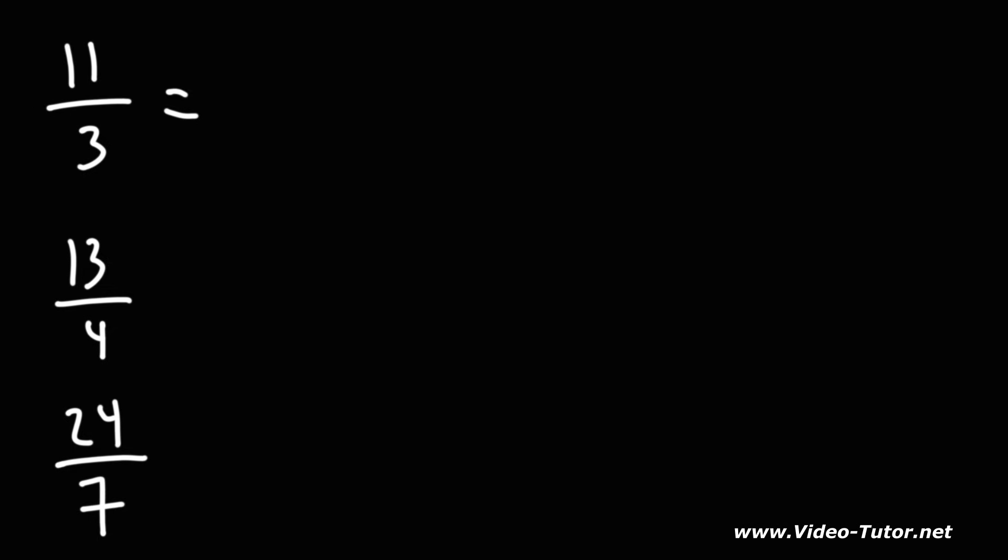What is the highest multiple of 3 just under 11? This is going to be 9. And 11 minus 9 is 2. So I'm going to replace 11 over 3 with 9 over 3 plus 2 over 3 because they're equivalent. 9 divided by 3 is 3. So we have 3 plus 2 over 3.